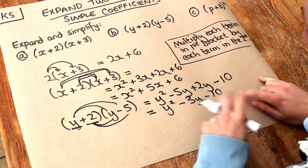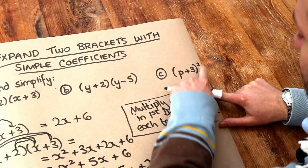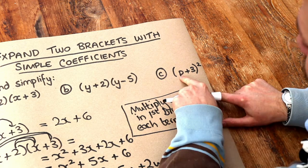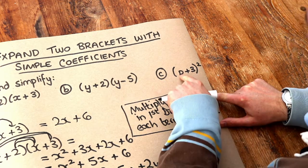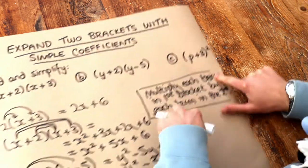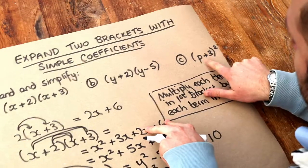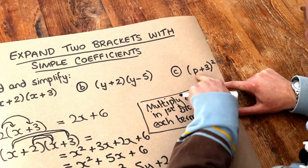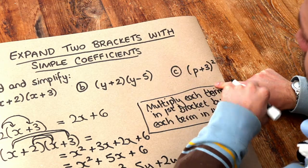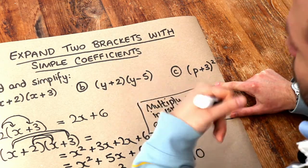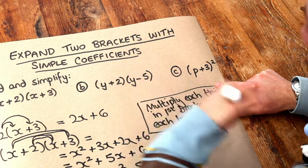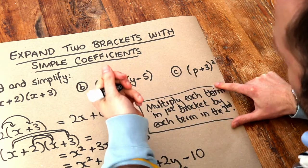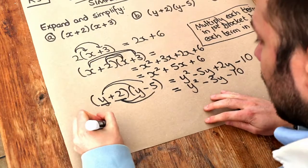Finally, with p plus 3 squared, a common student misconception is to think that we just do p squared and 3 squared, so it's p squared plus 9. But it doesn't work like that. We need to write out this bracket twice, because anything squared just means that thing multiplied by itself. If I had 2 squared, it means 2 times 2. If I had 3 squared, it means 3 times 3. So p plus 3 squared means p plus 3 times p plus 3.